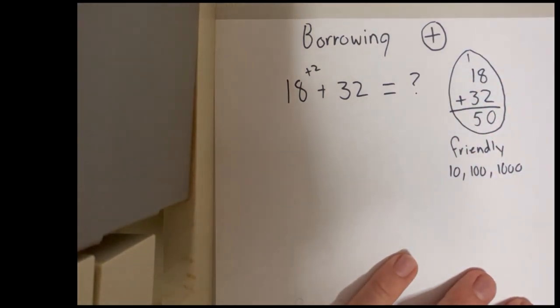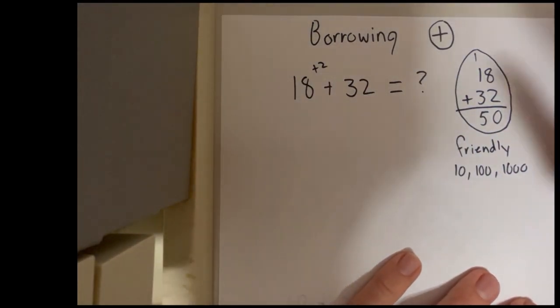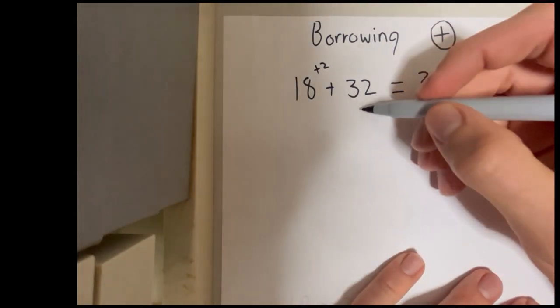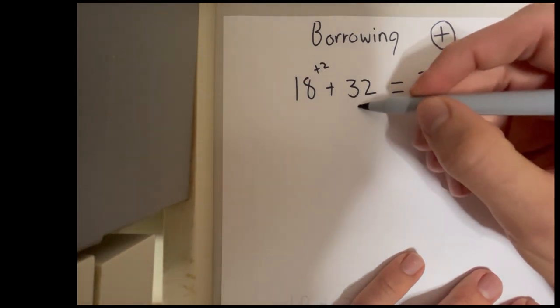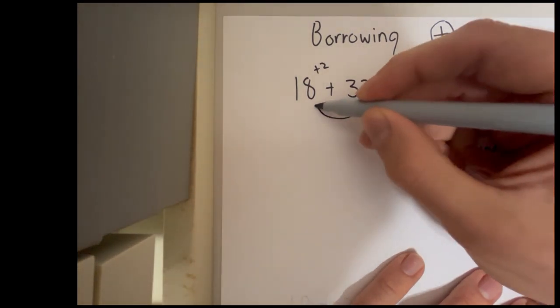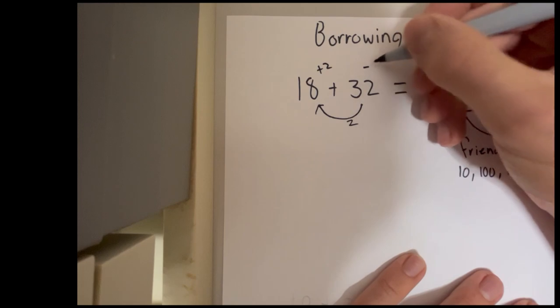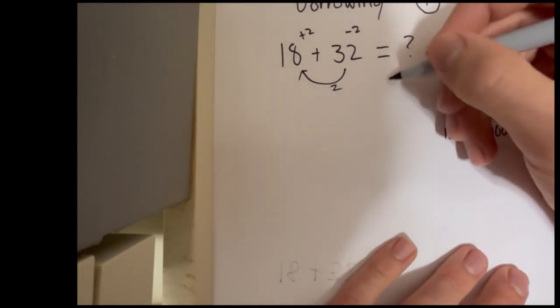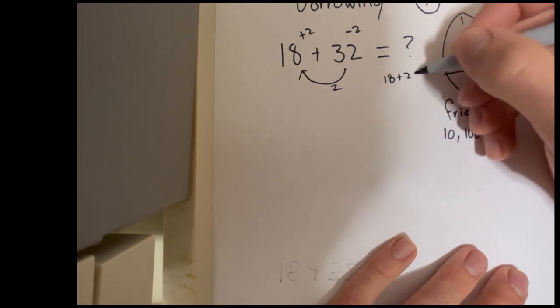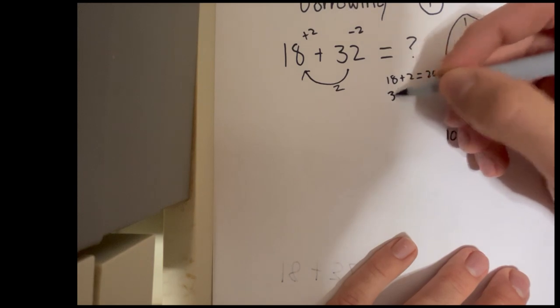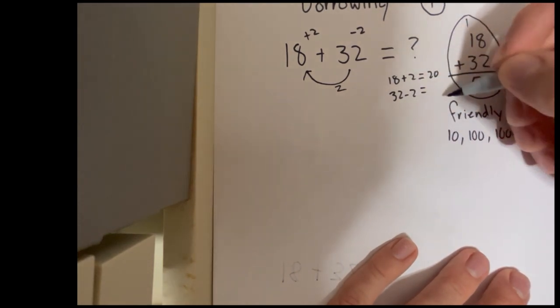But hang on, we can't just plus 2 onto 18. That makes it a completely different question, you might say. And you know what? You're right. We actually need to borrow it. Hmm, I wonder if we can see a 2 lying around somewhere. Well, I can certainly see one. Let's borrow it from the 32. So if we move our 2 over here, sorry 2, we're going to take that away. And we're going to end up with a new equation. So we have to minus 2 from that. We'll look at 18 plus 2 equals 20, and 32 minus 2 equals 30.